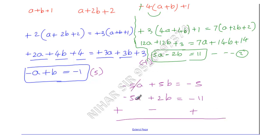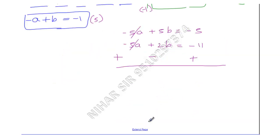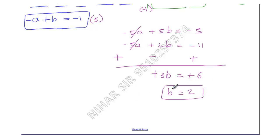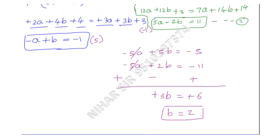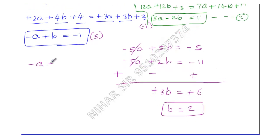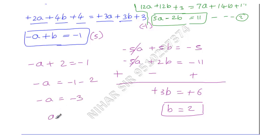The 5A terms cancel. We get 5B - 2B = 3B, and -5 - (-11) = 6. So 3B = 6, meaning B = 2. Substituting B = 2 into Equation 1: -A + 2 = -1, so -A = -3, therefore A = 3.